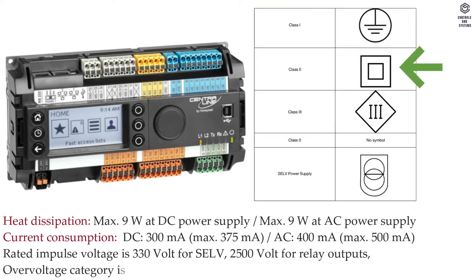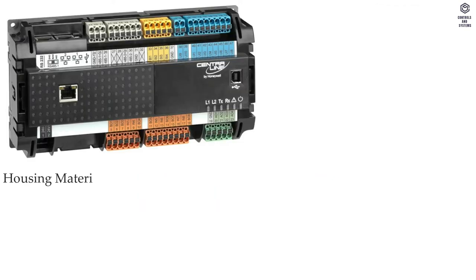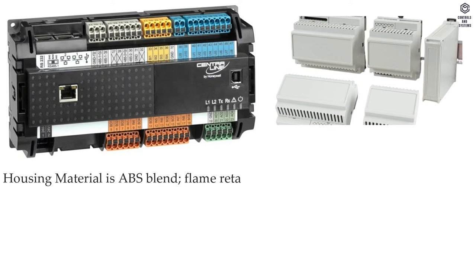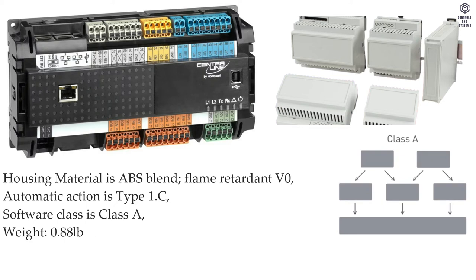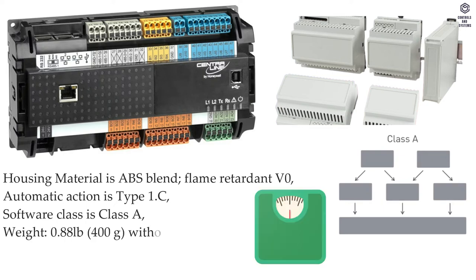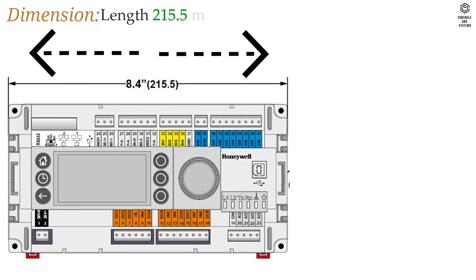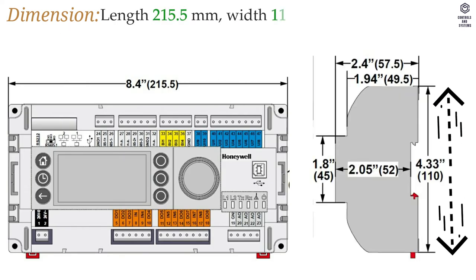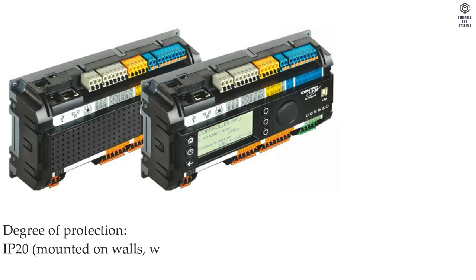Overvoltage category is 2. Mechanical data: housing material is ABS blend flame retardant V0, automatic action is type 1.C, software class is class A, weight is 400 grams without packaging. Dimensions: length 215.5 mm, width 110 mm, depth 57.5 mm.